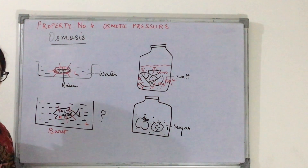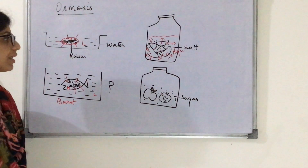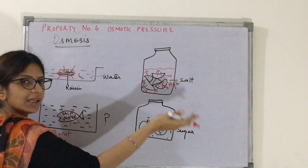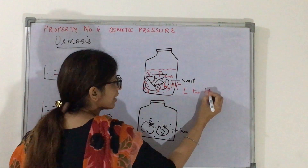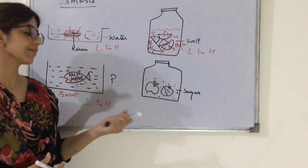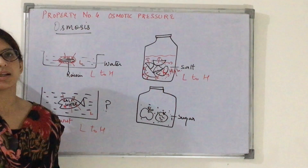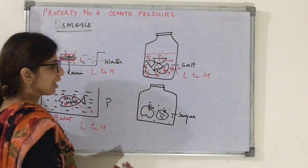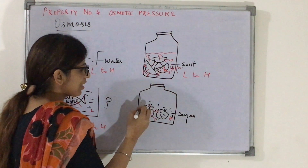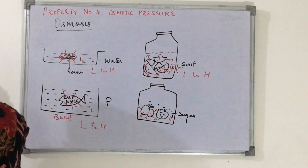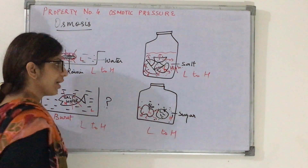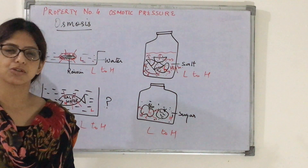Salt helps in osmosis. For example, in mango pickle, here the mango has low concentration and the salt has high concentration, so water moves out of the mango — from low to high concentration. Similarly, when fruits are placed in a jar with high sugar content, the same thing happens. So all these four are examples of osmosis.